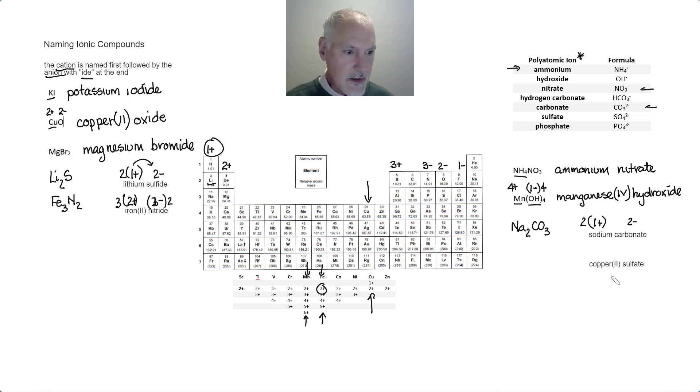And lastly, copper(II) sulfate. Sulfate tends to be 2-, wanting to gain two electrons. Copper here is using the 2 charge, so that will be 2+. That's a perfect match. So this would be CuSO₄. That's a quick review of the nature of the ionic bond, as well as how to name ionic compounds.